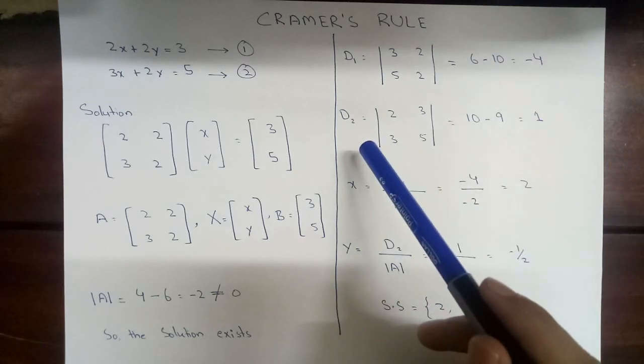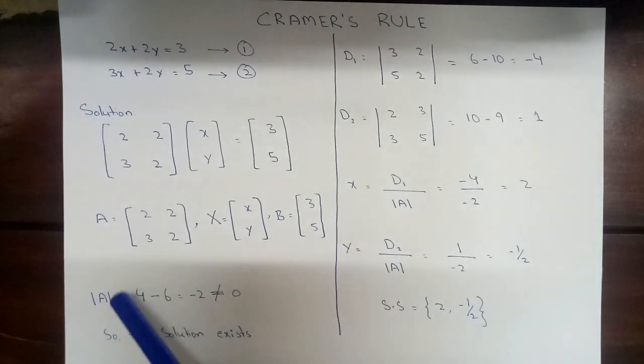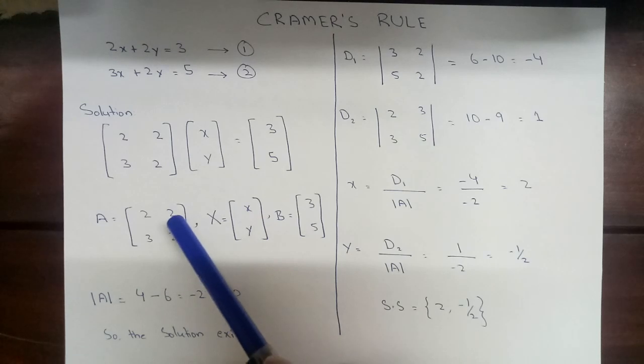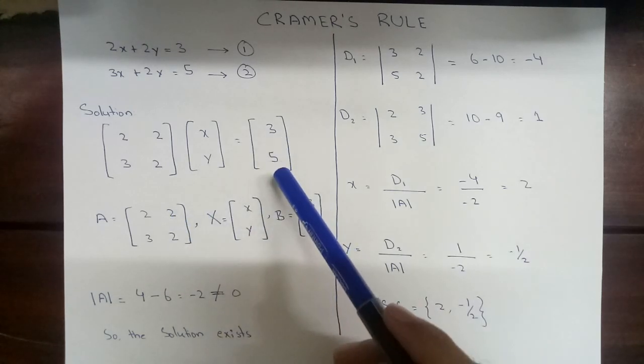In the same way, we will determine D2. What will be D2? The first column of matrix A will be same as it is, and the second column of the matrix will be replaced by 3 and 5.